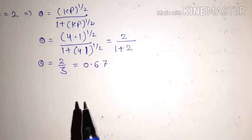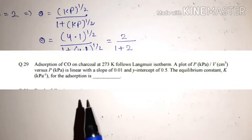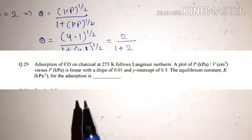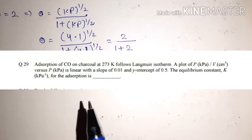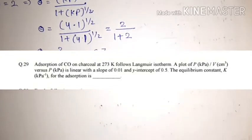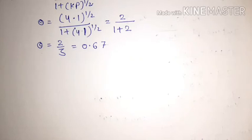That was the GATE 2017 question with answer θ = 0.67. The next question is from GATE 2016: adsorption of carbon monoxide on charcoal at 273 K follows Langmuir isotherm. A plot of p/v versus p is linear with a slope of 0.01 and intercept of 0.5. Find the equilibrium constant K for the adsorption.